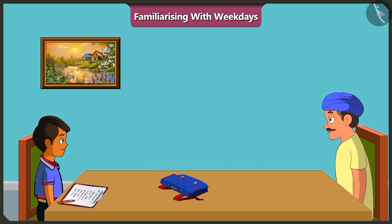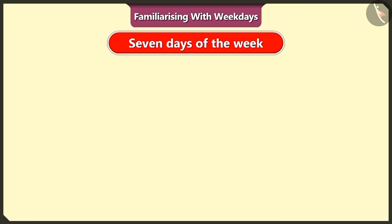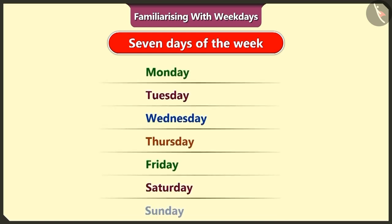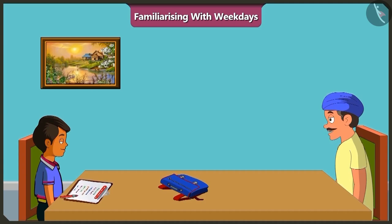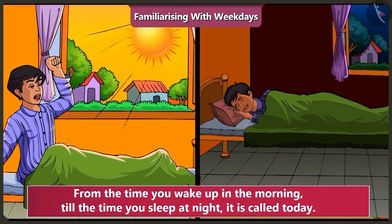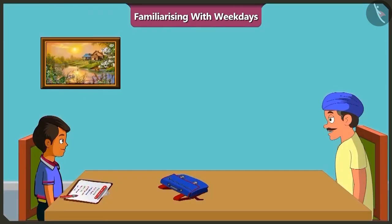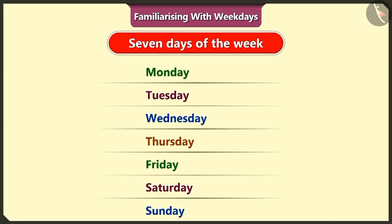I didn't understand. First of all, write the days of the week on a piece of paper. I wrote down the names of the seven days of the week. Now tell me, what day is today? From the time we wake up in the morning till the time we sleep at night is called today — Monday. So now tell me, which day of the week is today? Today is the first day of the week, it means Monday. Right? We will circle Monday and write today next to it.